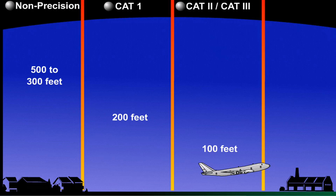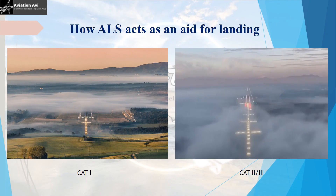Along with the instrument landing system, which provides instrument aid, the approach lighting system is used to provide visual aid for carrying out a landing maneuver. When visibility is not lower than 800 meters and RVR is not lower than 550 meters, the CAT-1 approach lighting system helps carry out a safe landing, helping the pilot identify that the runway is aligned with the centerline of the approach lighting system.